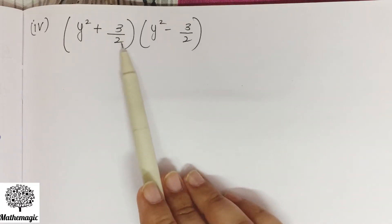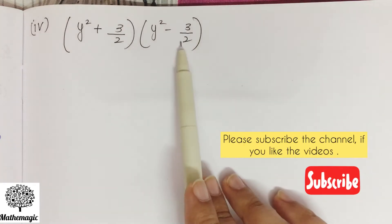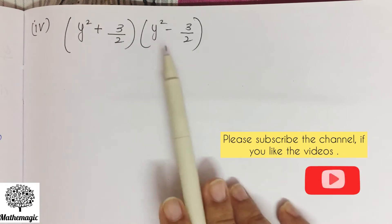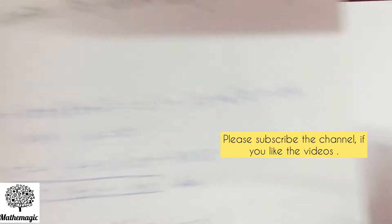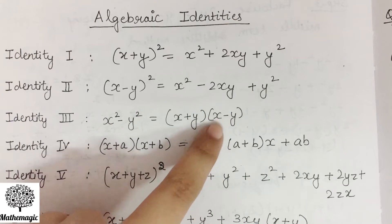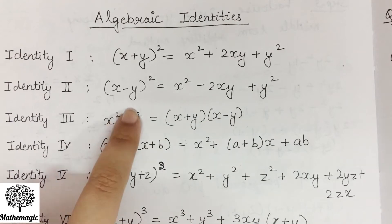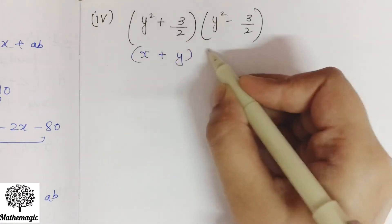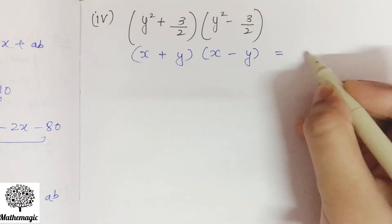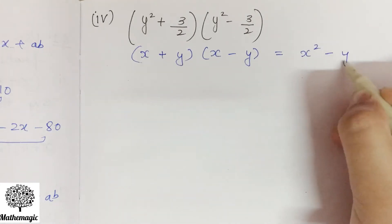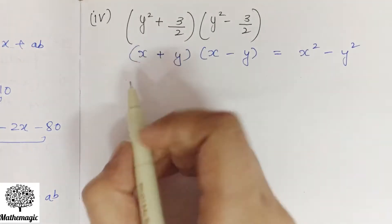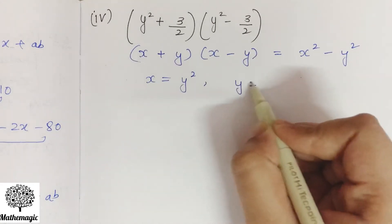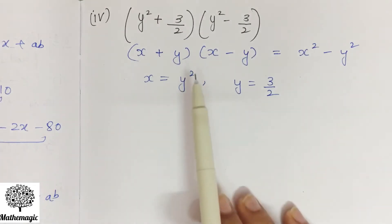Fourth part: y square plus 3 by 2 into y square minus 3 by 2. In this part you can use the identity x plus y into x minus y, which is equal to x square minus y square. Here x is y square and y is 3 by 2. Now we have to substitute it.